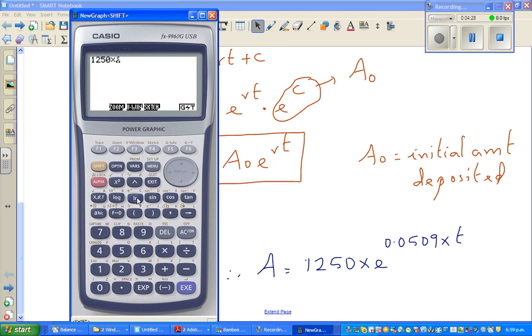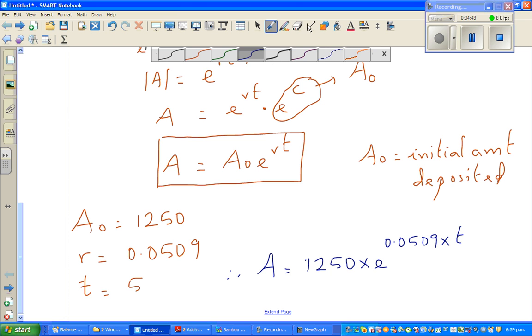Times five, I should have written five years. Times five equals 1612.3 dollars, rounding to one decimal place. So where is my eraser? So this should be five.